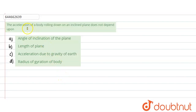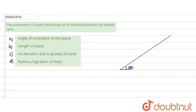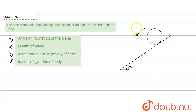In this question, what is given: the acceleration of a body rolling down an inclined plane does not depend upon — okay. So for example, if there is an inclined plane making an angle of theta, and there is an object — it could be a cylinder, a disc, a ring, a solid cylinder, hollow cylinder, solid sphere, or hollow sphere — rolling down an inclined plane.